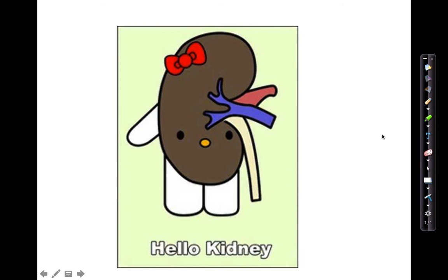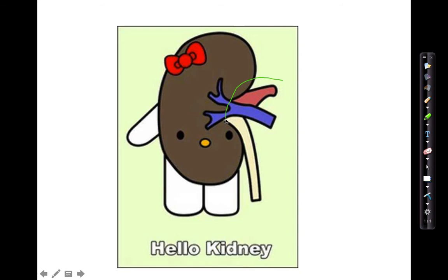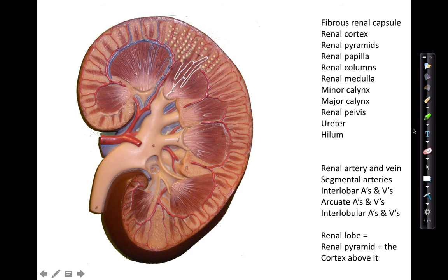Here is the hilum of the kidney. We have the renal artery going into the kidney, the renal vein coming out draining the kidney, and the ureter taking urine the kidney made down into the bladder. The area where the blood vessels go in and out and the ureter comes out is called the hilum — the same basic principle as the hilum of the lung.